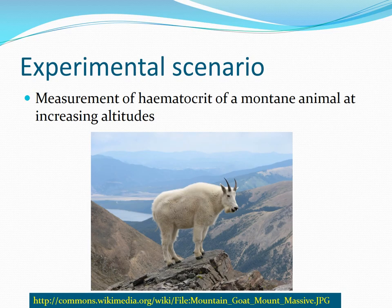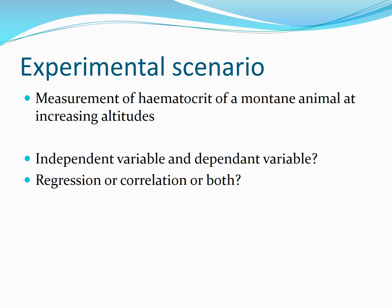Let's look at another experimental scenario. We're wanting to measure the hematocrit — the red blood cell amount — in a mountain animal at increasing altitude. What's the independent variable and what's the dependent variable? The hematocrit is going to be the response and the increasing altitude is the predictor. We can think about whether these are suitable for regression, correlation, or both.